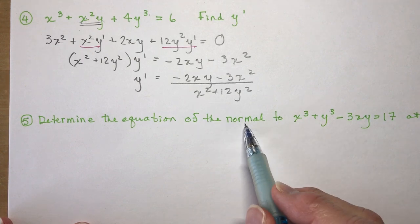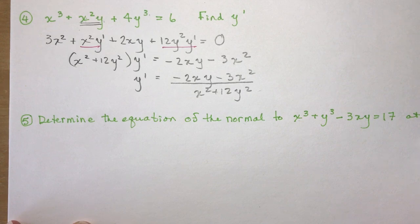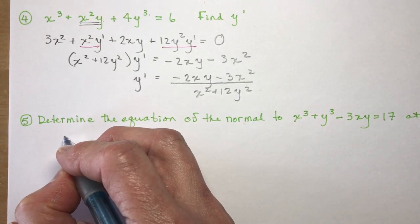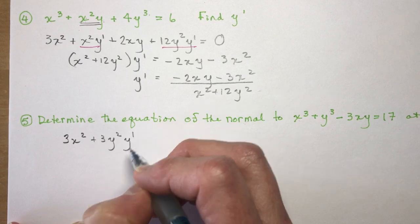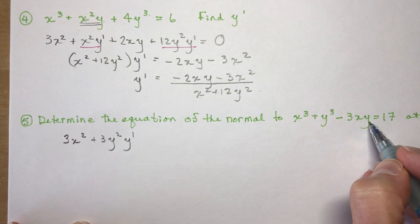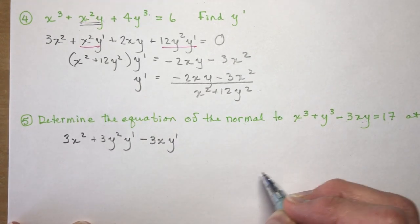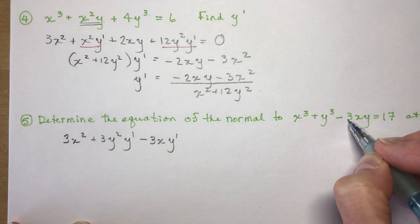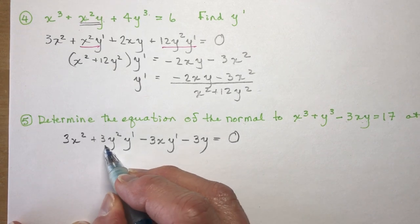The last example: determine the equation of the normal to x³ + y³ − 3xy = 0 at the point (2, 3). A normal is a line perpendicular to the tangent. First find the slope of the tangent, then take its negative reciprocal. Taking the derivative: 3x² + 3y²·y′ minus — and note the product rule on 3xy — minus 3(x·y′ + y·1) = 0.